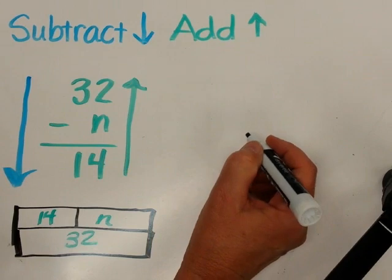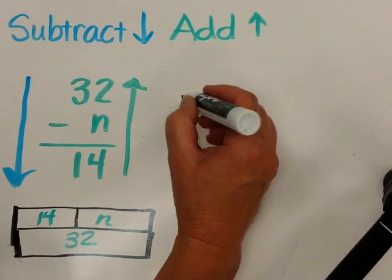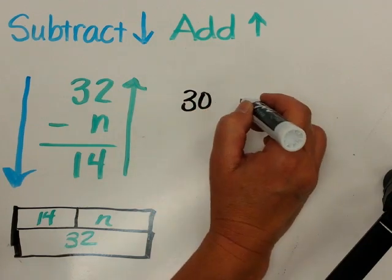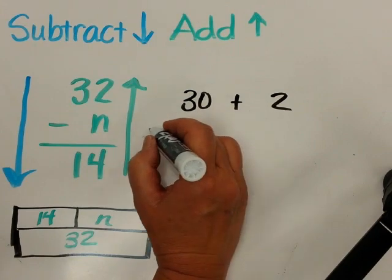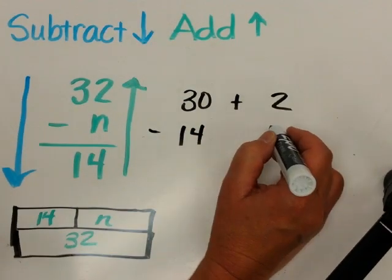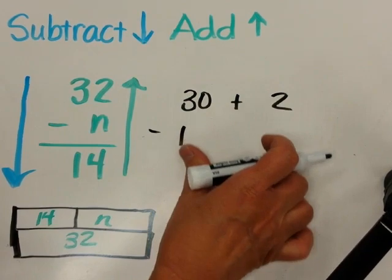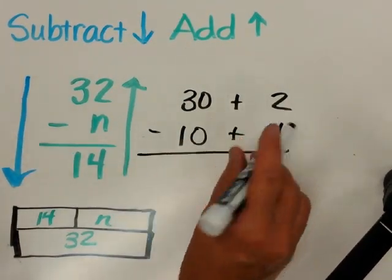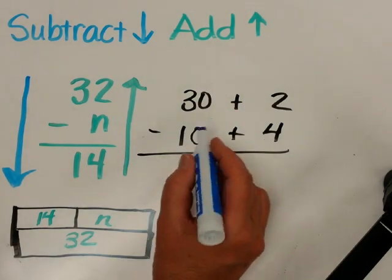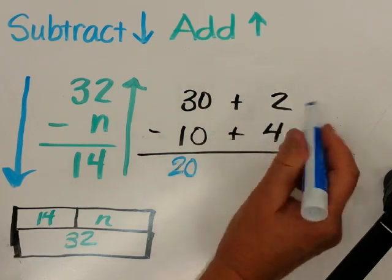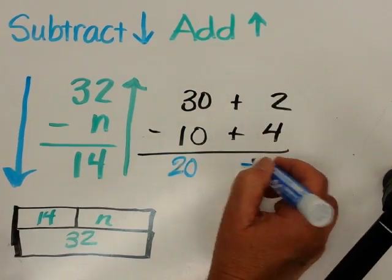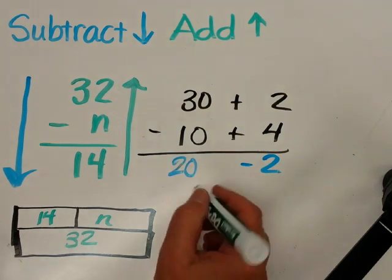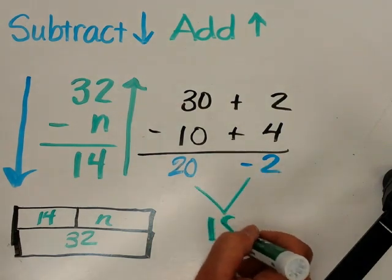You can solve this any way you'd like. I think I'm going to do it in a subtraction format today. But I'm going to do expanded form. I'm going to say 30 and 2 subtract 14. I'm sorry, that's not expanded. A 10 and a 4. So 30 subtract 10 is 20. But when I do 2 subtract 4, I'm going to get a negative 2, aren't I? When I take a look at 20 and negative 2, I know I have 18.